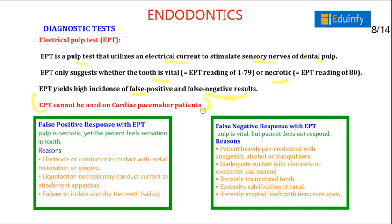EPT is contraindicated in cardiac pacemaker patients. For false positive EPT response, the pulp is necrotic yet pain sensation is felt; reasons include electrode contact with metal restoration or gingiva, liquefaction necrosis conducting current to the attachment apparatus, and failure to isolate or dry the tooth. For false negative EPT response, the pulp is vital but the patient does not respond; reasons include heavy premedication with analgesics, alcohol, or tranquilizers; inadequate electrode contact; recently traumatized tooth; calcification of canals; or a recently erupted tooth with immature effects.